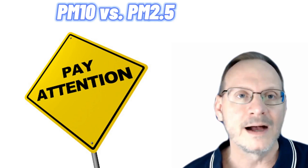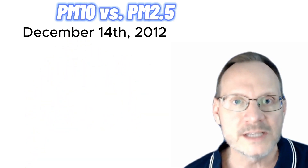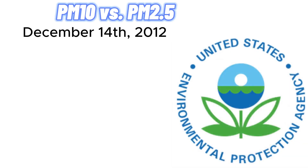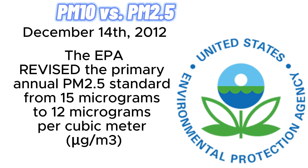This next part is very important for people to understand and grasp. On December 14, 2012, the U.S. Environmental Protection Agency — the EPA — strengthened the nation's air quality standards for fine particle pollution to improve public health protection by revising the primary annual PM2.5 standard from 15 micrograms to 12 micrograms per cubic meter. So in 2012, the EPA lowered the concentration of particles in the standardization for PM2.5 that they considered to be acceptable for good air quality.